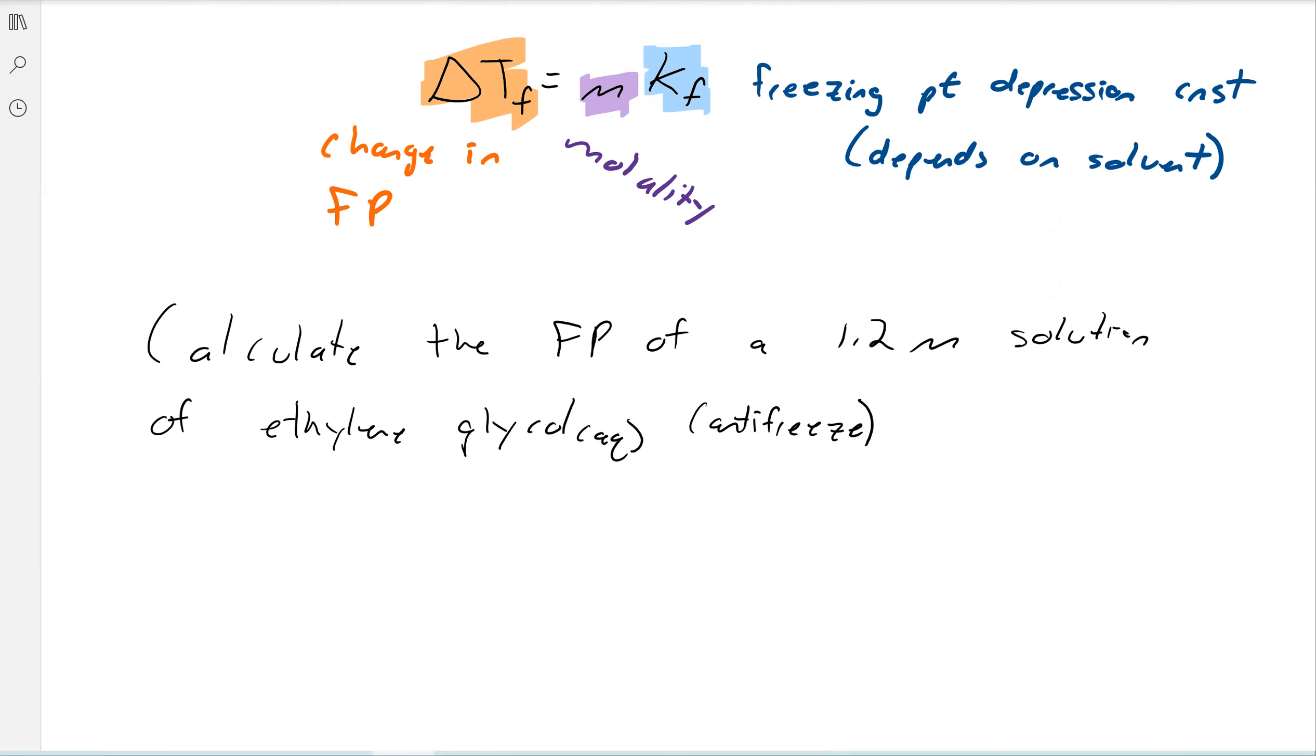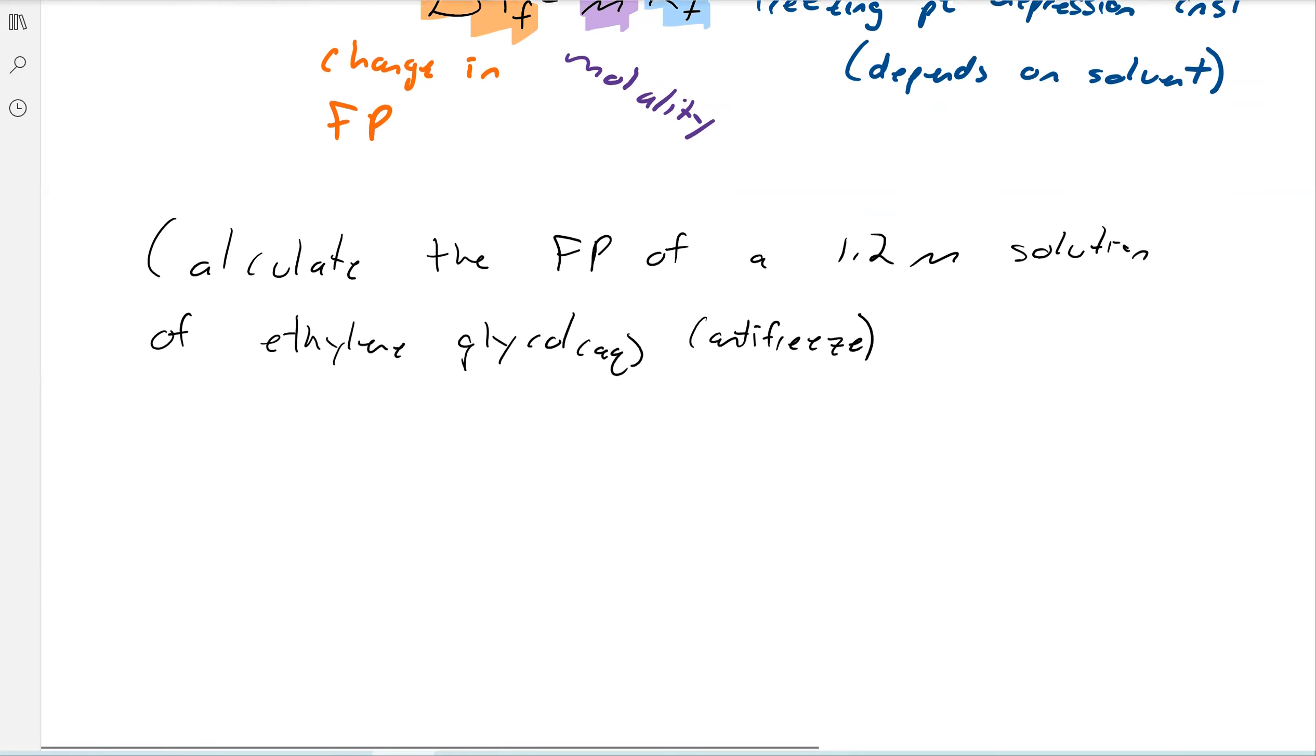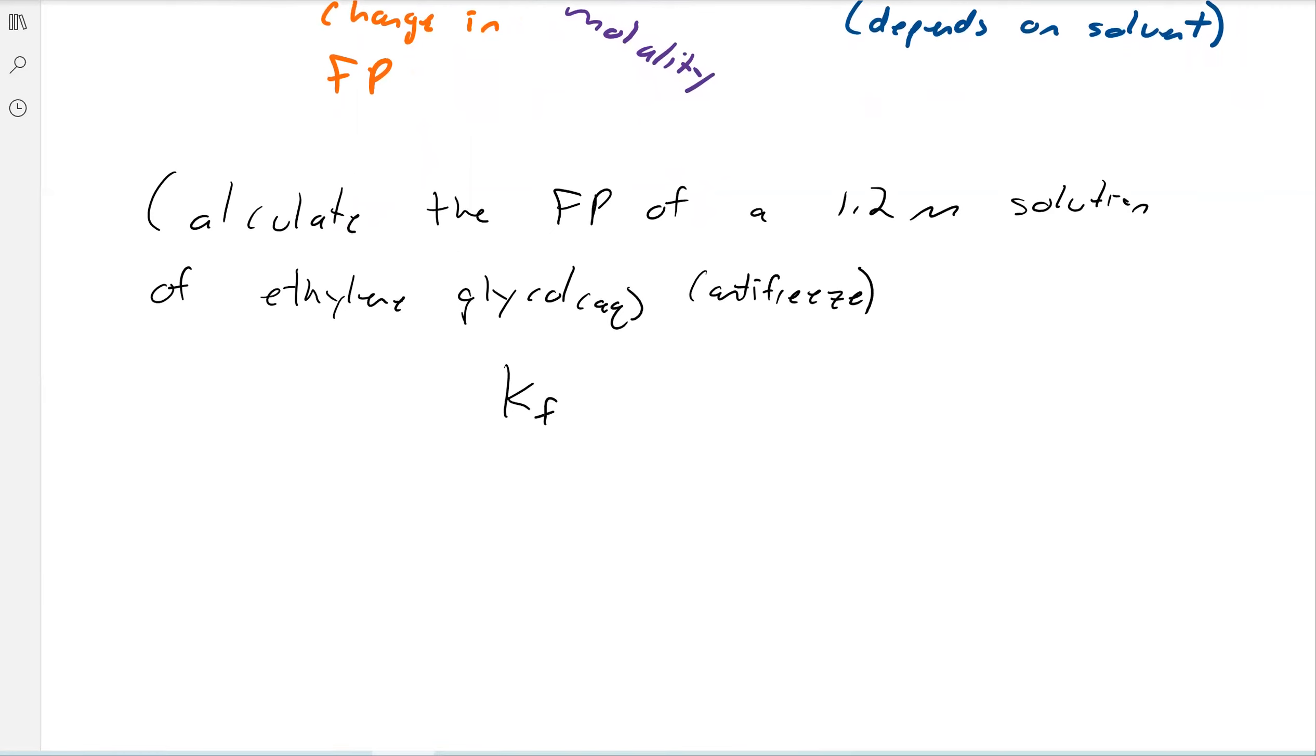Right? So again, if you live somewhere cold, you put antifreeze on your car in the hopes that all the lines won't freeze over. The freezing point depression constant of water, that's K_F, is 1.86 degrees Celsius kilogram per mole.